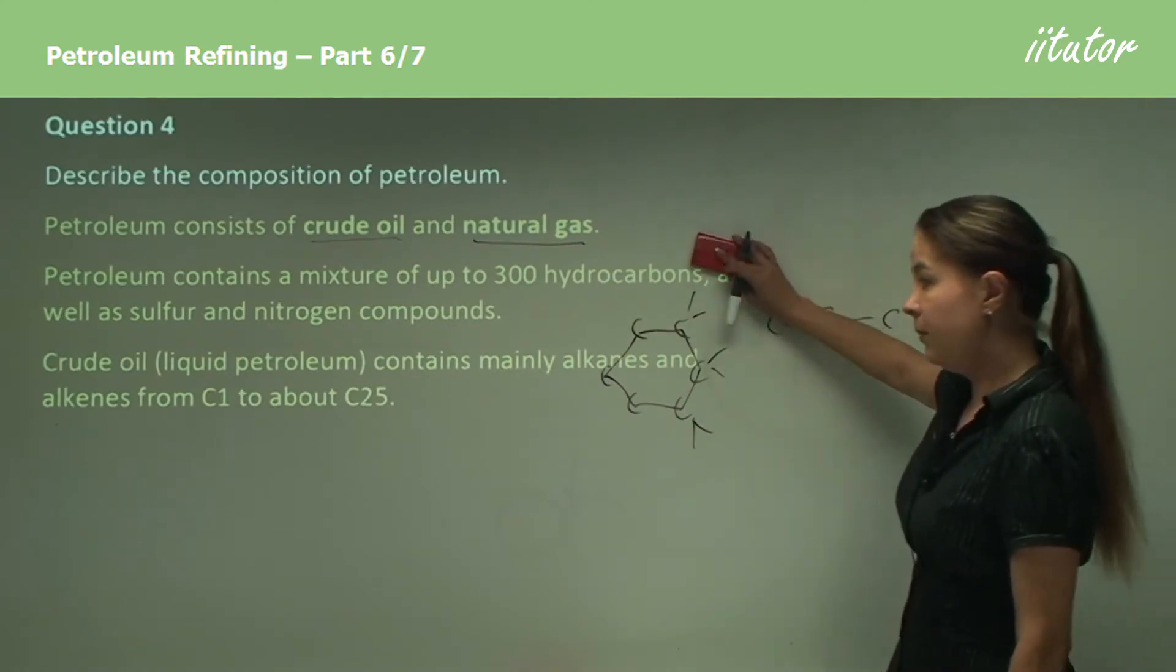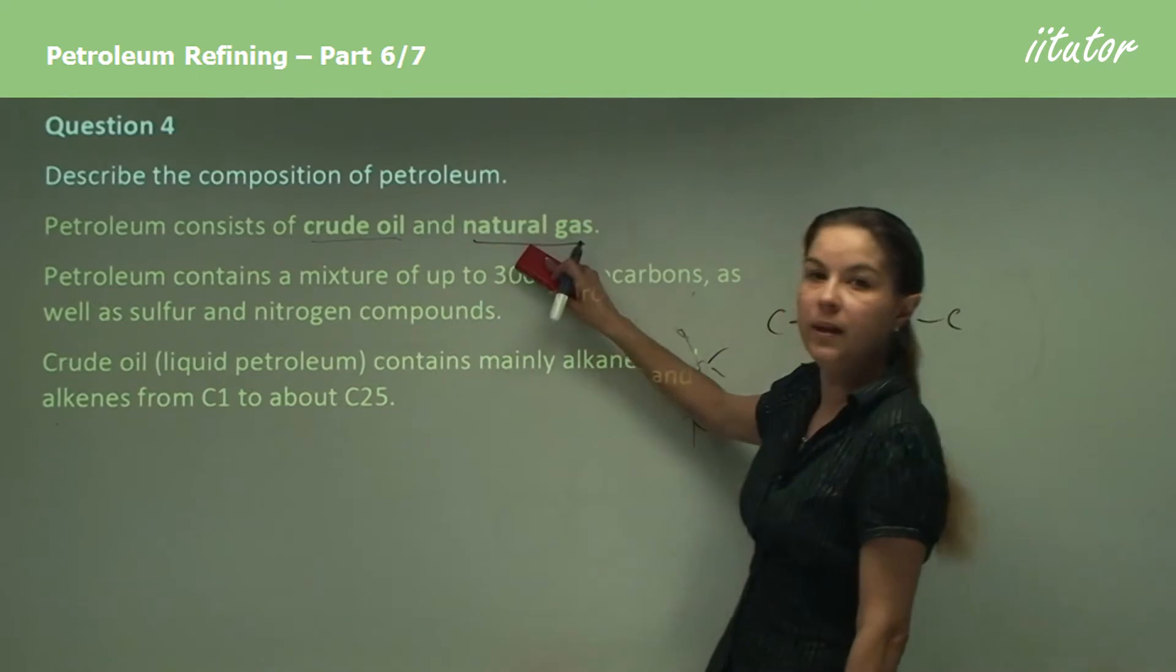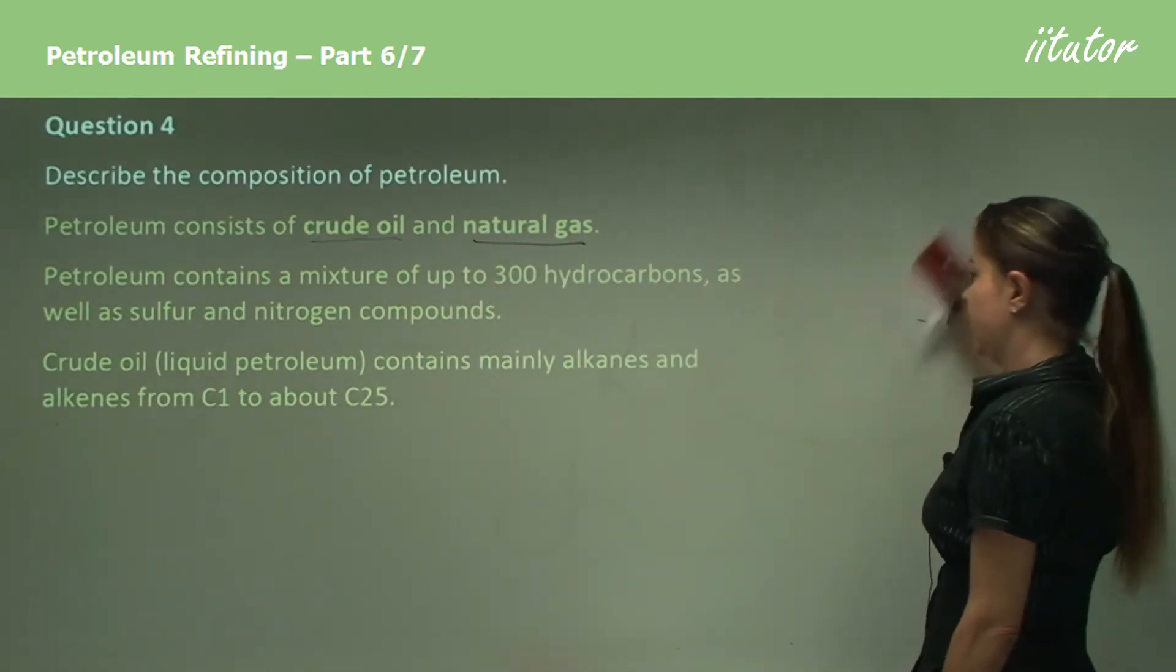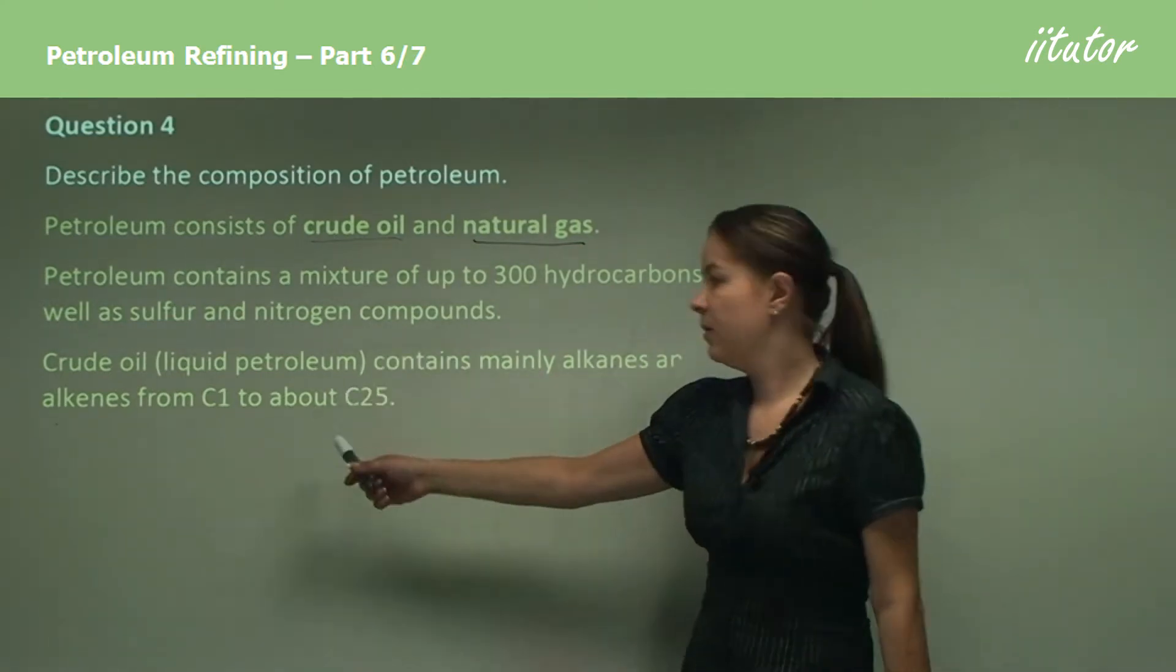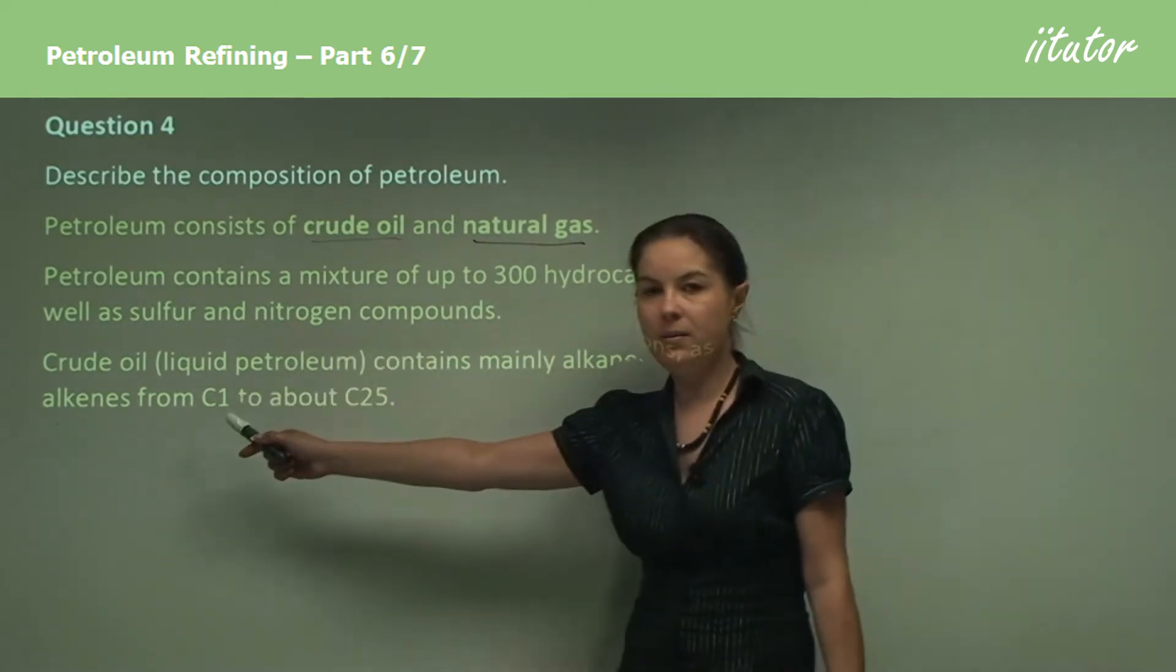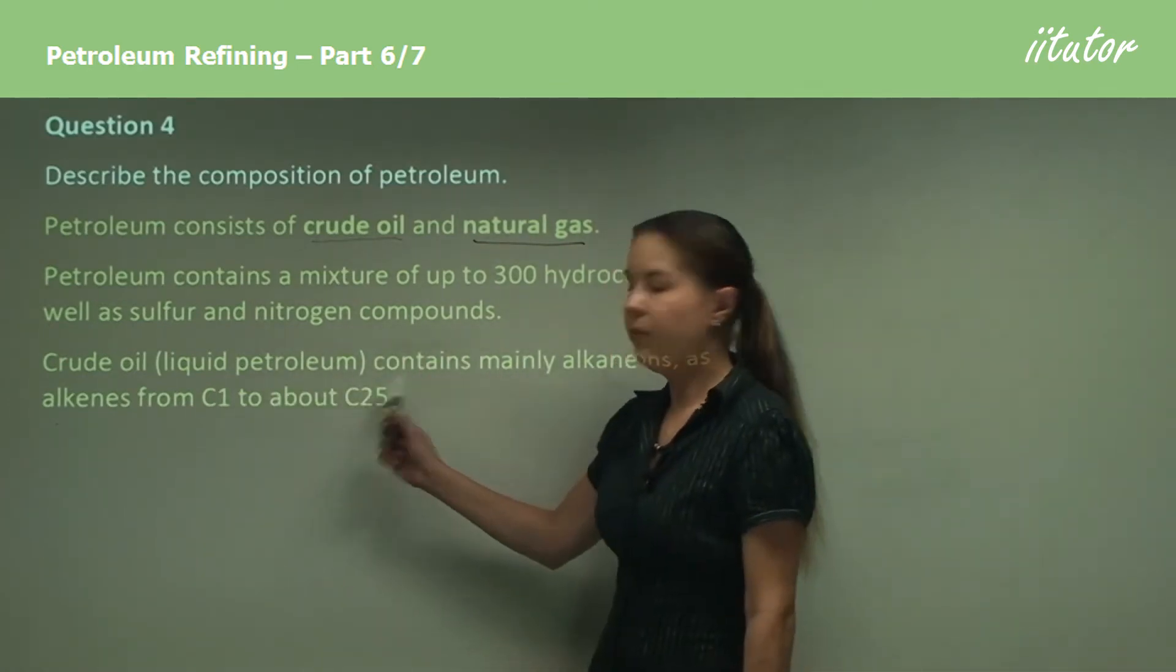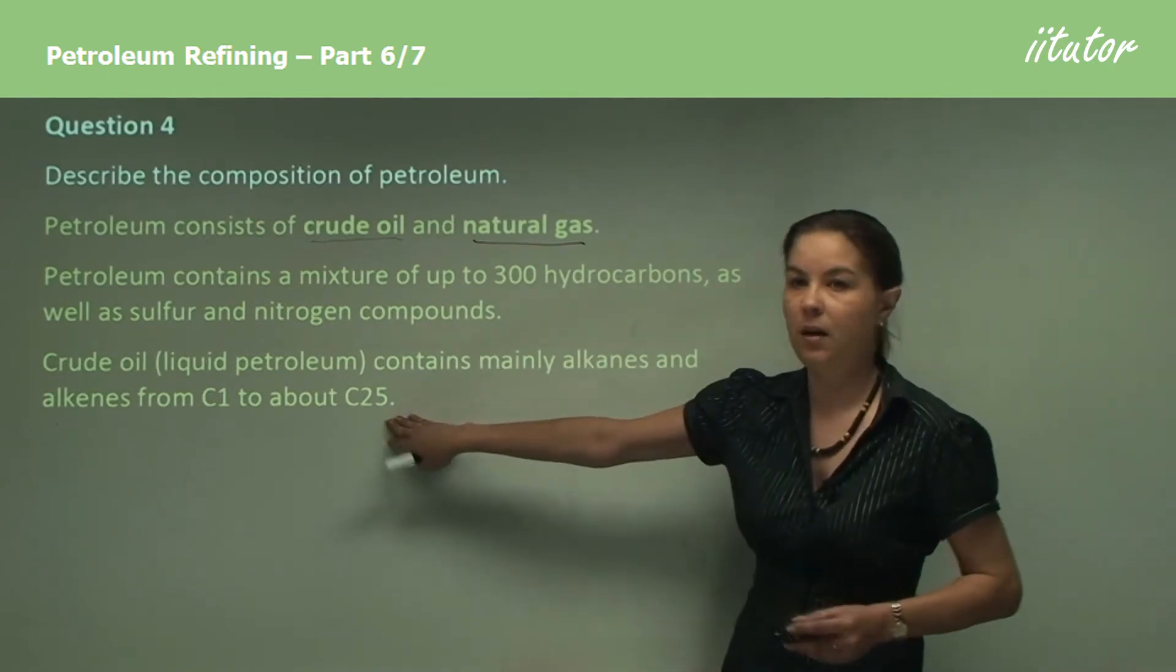Now crude oil, to start with, there's two parts to this: crude oil and natural gas. Thinking about crude oil, the majority of crude oil is made up of alkanes and alkenes from C1 to C25. Alkanes have only single bonds, alkenes have at least one double bond, and C1 to C25 denotes that there's either one carbon all the way up to 25 carbons.